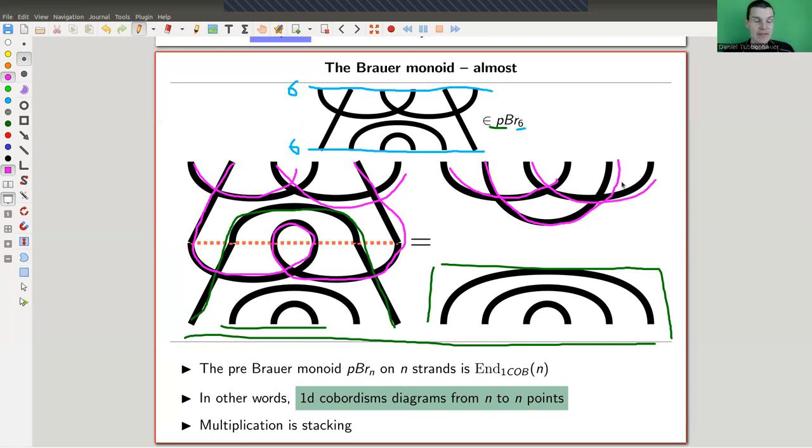It's really the same as in the cobordism picture. It's a topological composition, and I call it multiplication. It's just the endomorphism of one object. And multiplication is a stacking operation. In other words, cobordism pictures with multiplication being stacking. And I just collect them in this monoid. That's the Brauer monoid.